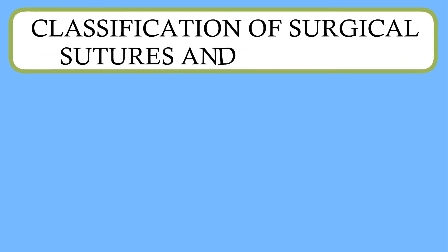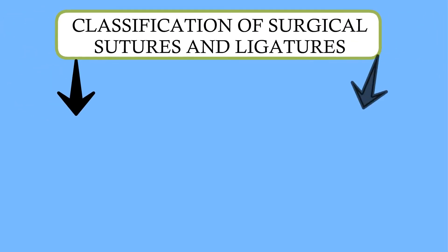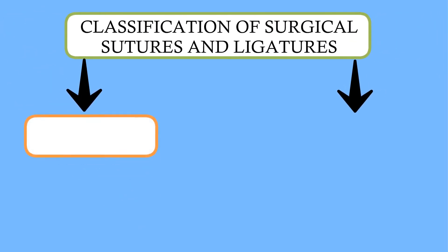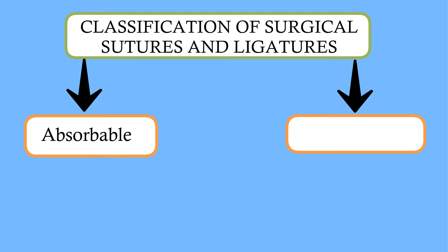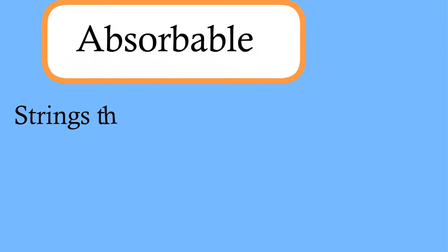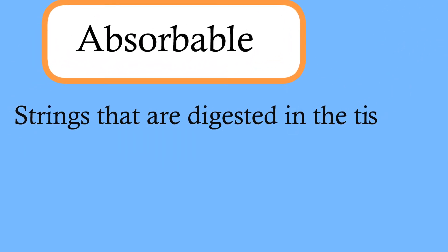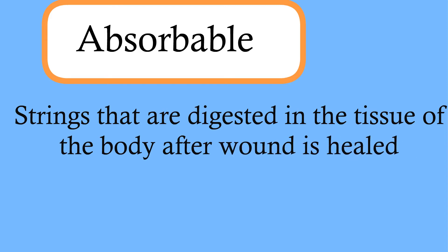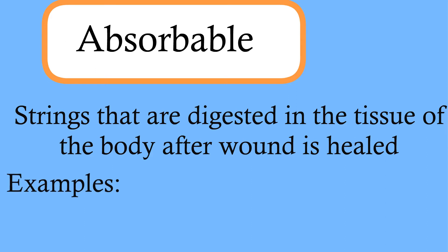Now let's see the classification of surgical sutures and ligatures. It is of mainly two types. The first one is absorbable sutures and ligatures, and the second one is non-absorbable sutures and ligatures. Absorbable sutures and ligatures are strings that are digested in the tissue of the body after the wound is healed. Example: catgut.